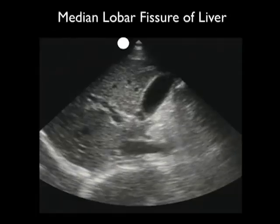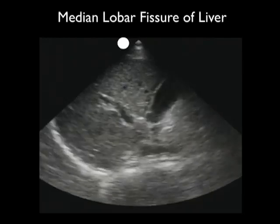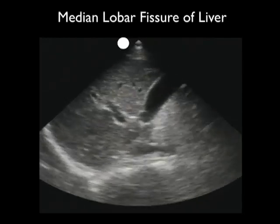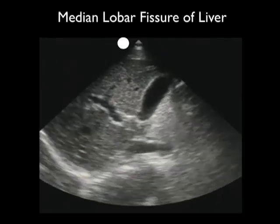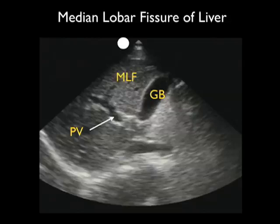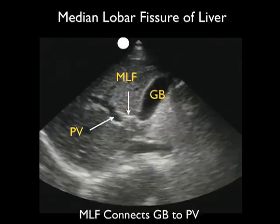Here's an ultrasound image showing the median lobar fissure of the liver in greater detail. We see the gallbladder, the pear-like structure to the right of the image, and the branching portal vein over towards the left. Between the two structures we see the thin white line known as the median lobar fissure. The MLF can be a very important landmark as we look from the portal vein up to the neck of the gallbladder to inspect for any small stones that may be lodged there and causing biliary colic.